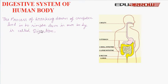The process of digestion actually begins with the mouth. First, we will see the organs which help in digestion: mouth, food pipe, stomach, small intestine, and the large intestine, rectum, and anus.